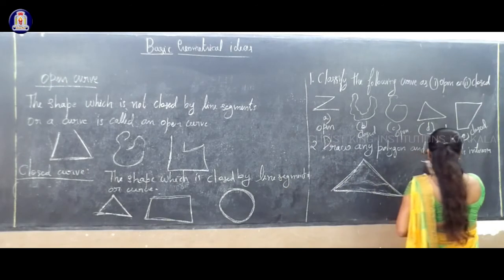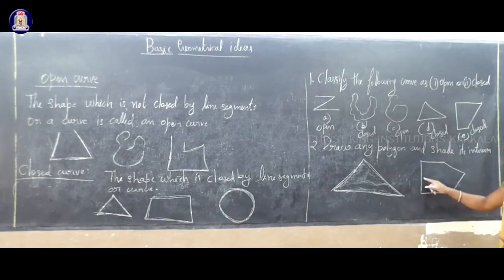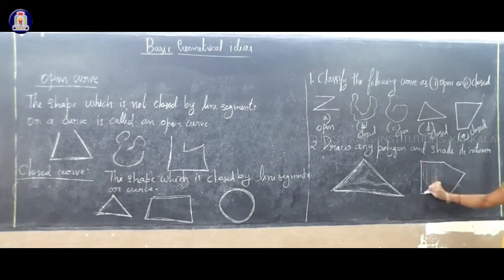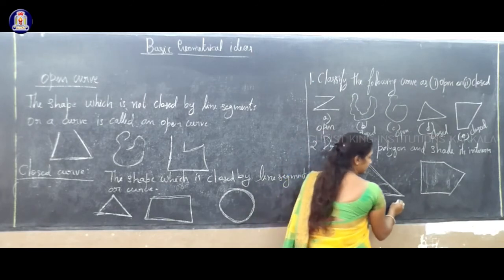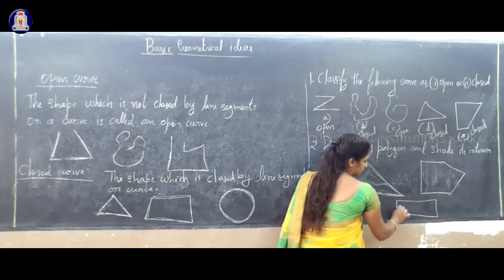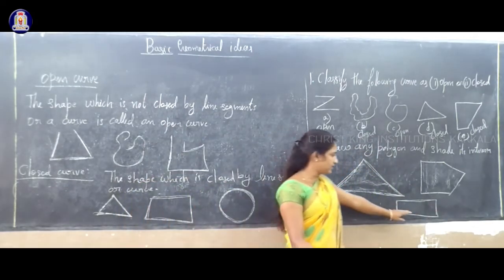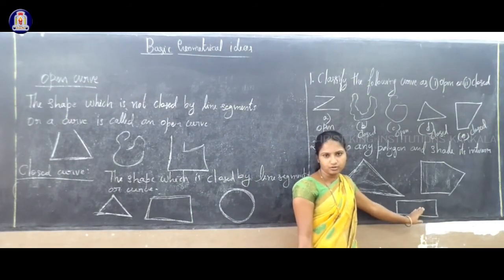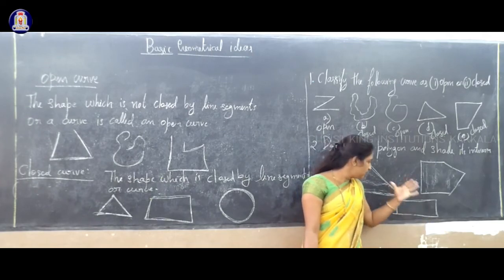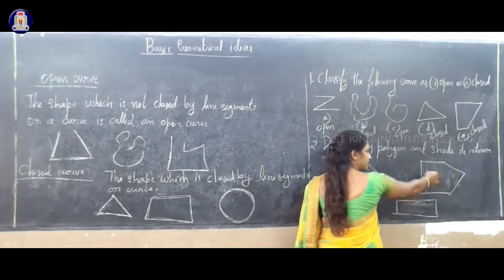If you want to draw one more polygon, that is a pentagon — one, two, three, four, five sides. You can also draw a quadrilateral — a polygon having only four sides. So examples of polygons are: triangle, quadrilateral, pentagon. This is the closed figure closed by line segments.